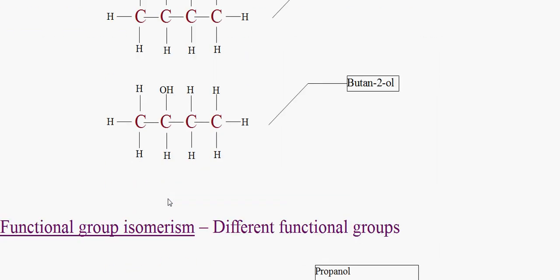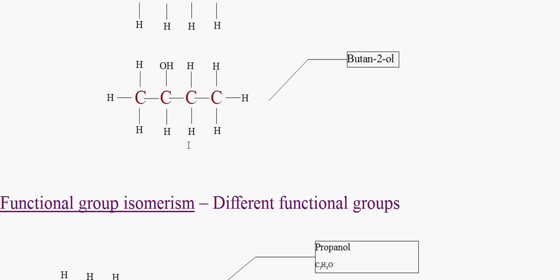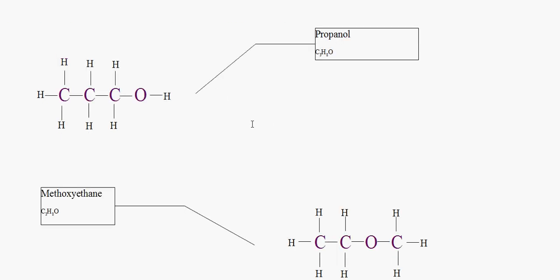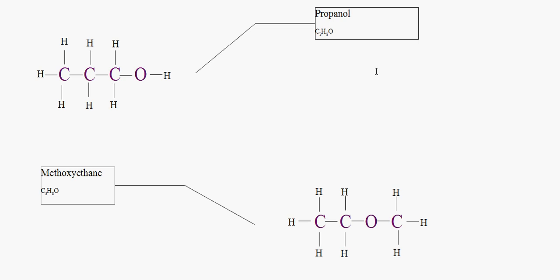Make sure you do not get this mixed up with functional group isomerism, which I'm going to explain now. This is for different functional groups. So if you look at this example here, you can see propanol, C3H8O, where the functional group isomer of propanol is methoxyethane, C3H8O.